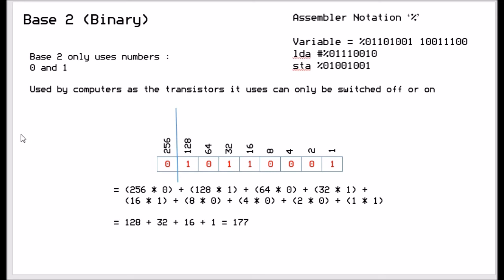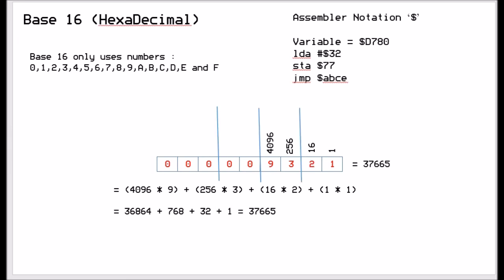Now the next base, base 16. Now this is a bit different because not only are we using numbers 0 to 9, we're also using some letters to represent the other numbers that can't be represented in base 10. So A will equal 10, B equals 11, C equals 12, D equals 13, and so on, 14 and 15.